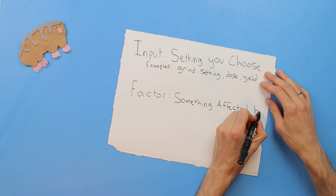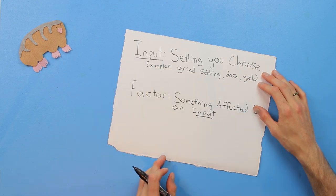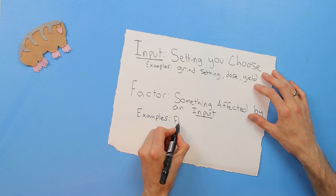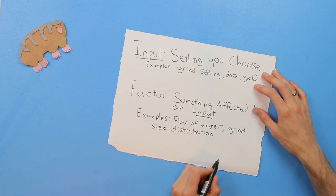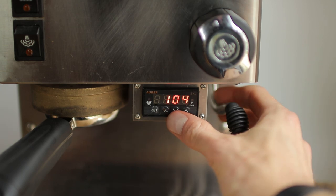These factors include things like grind distribution and preparation. To restate: when I'm talking about an input, I'm talking about a chosen setting, and when I'm talking about a factor, I'm talking about what that input affects. Unfortunately, you can't directly control factors.